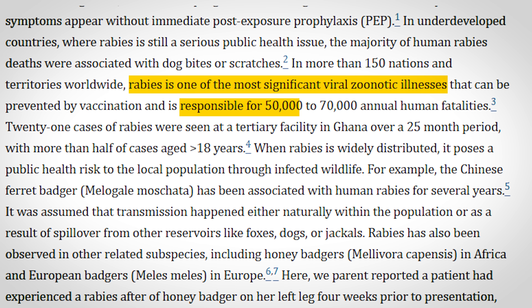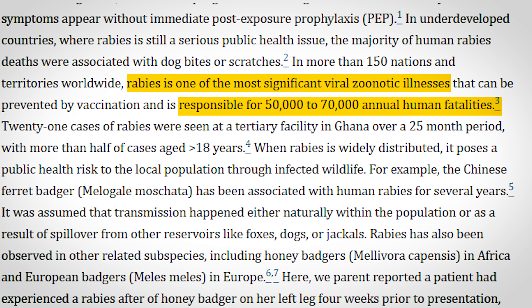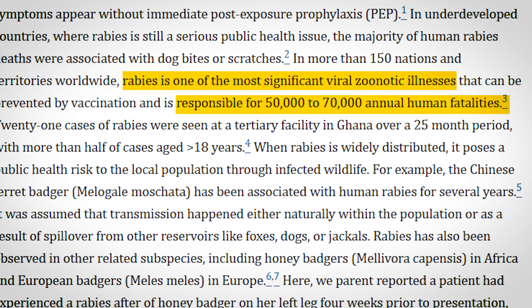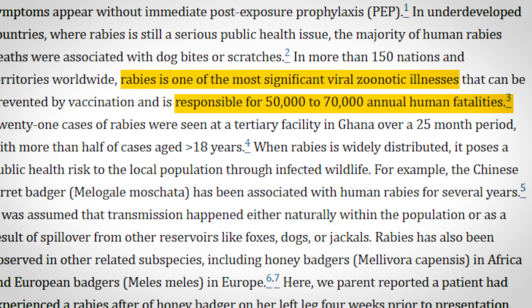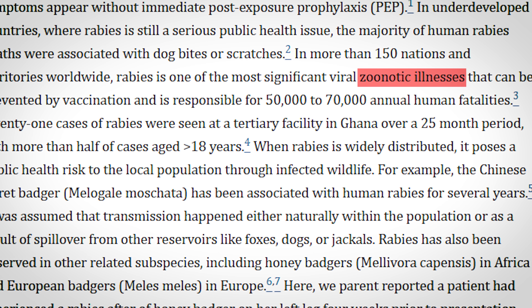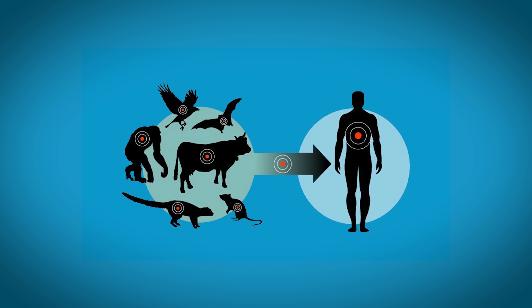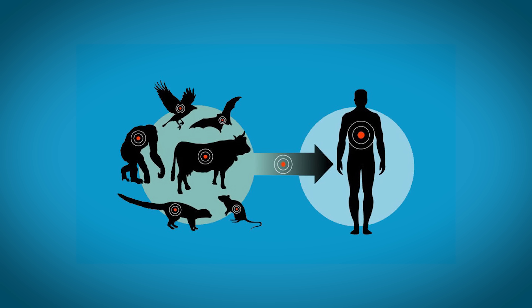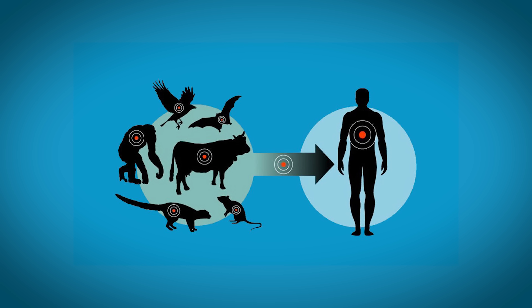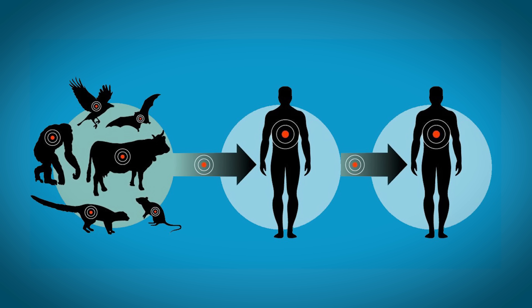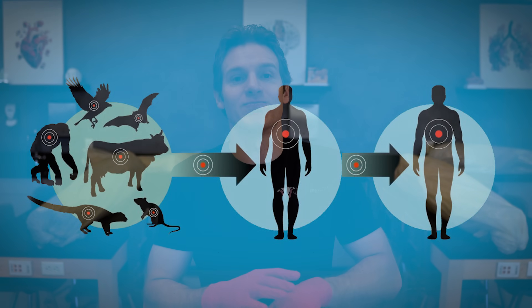Even today, rabies still kills anywhere from 50,000 to 70,000 individuals worldwide each year. Rabies is an example of what's called a zoonotic disease, meaning that it's transmitted from animals to humans. Although there have been some cases of direct human-to-human transmission, this is extremely rare, and by and large it's transmitted from animals to humans.